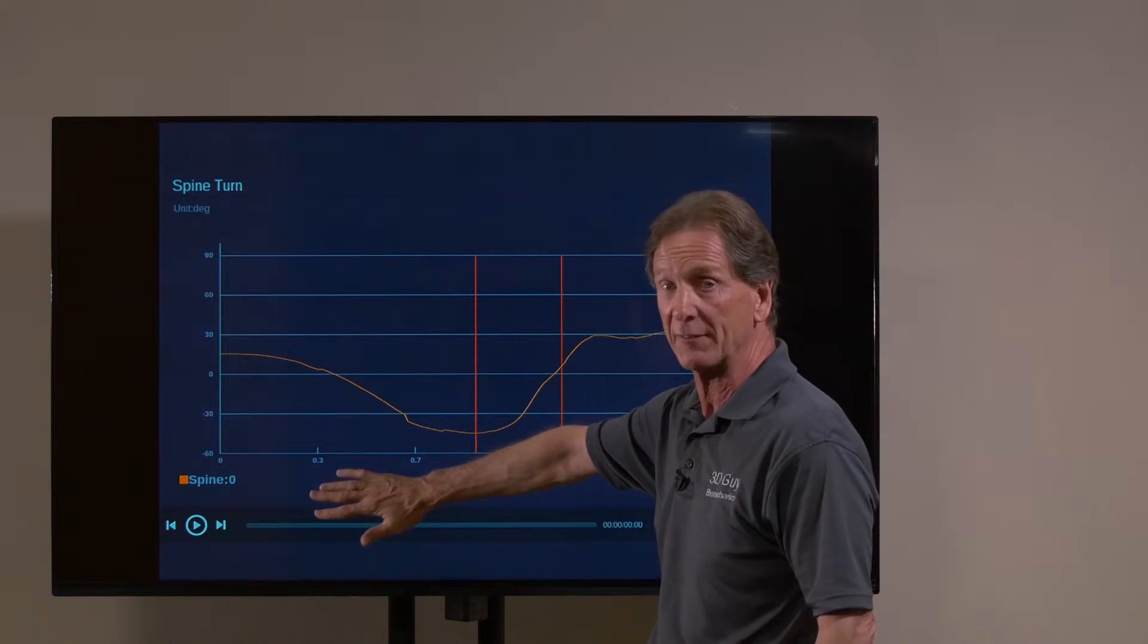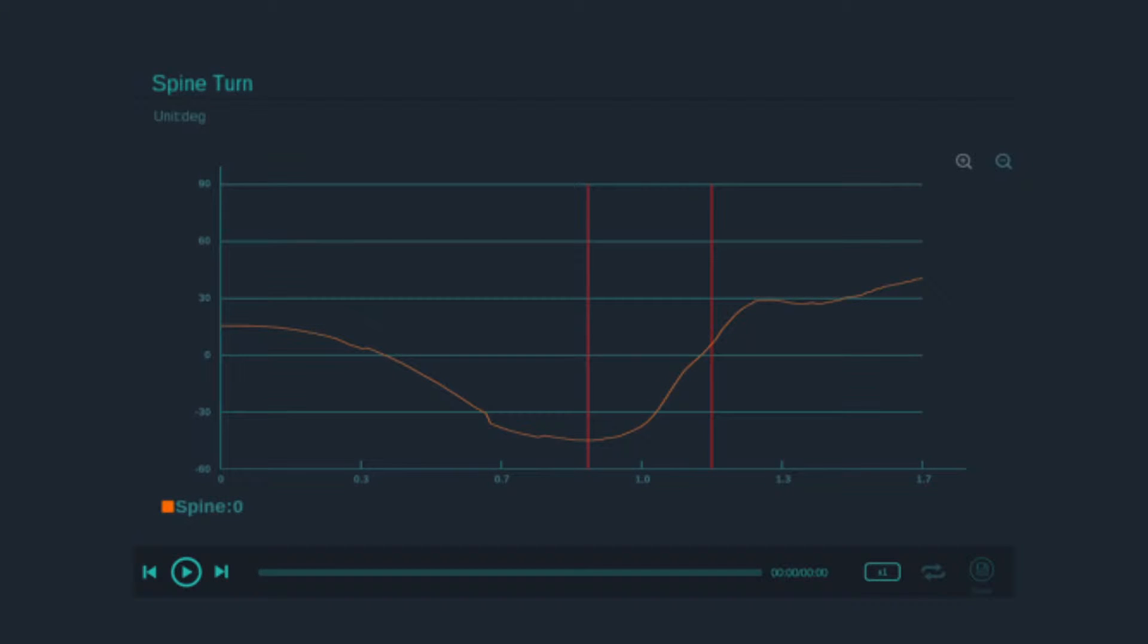So the first portion of the graph here is the backswing, next portion is the downswing, and finally the follow through. If we follow this curve through, it's telling how much separation we've got in different parts of the swing.